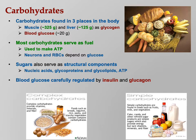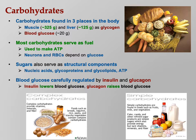Blood glucose is carefully regulated by insulin and glucagon — two antagonistic hormones that do the opposite of each other. Insulin lowers blood glucose; glucagon raises it. This is homeostasis: when blood glucose is too low, the pancreas releases glucagon to raise it; when blood glucose is too high, the pancreas releases insulin to bring it down.